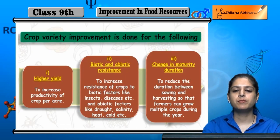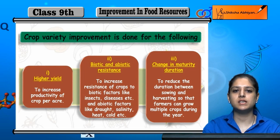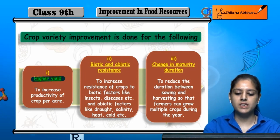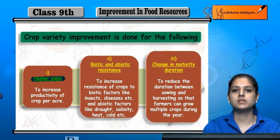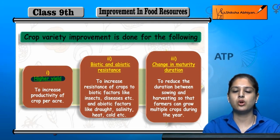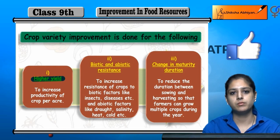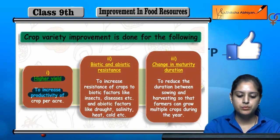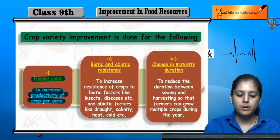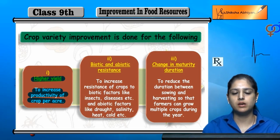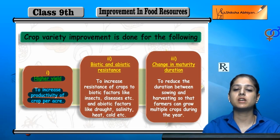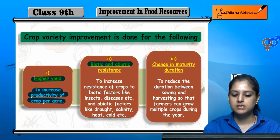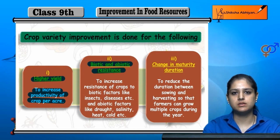Now, what are the reasons for crop variety improvement? The first reason is to increase productivity of crop per acre — that is, crop productivity per acre increases. So we improve the variety.